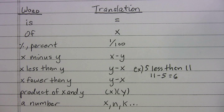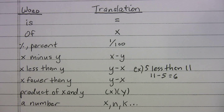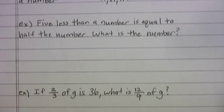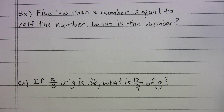Finally, these word problems will say 'a number' or something similar — that's just your variable. So anytime it says 'a number,' you can rewrite it as X, K, or whatever variable you're comfortable with. You can pause the video here if you want to write down this list. Now we're gonna go into problems and start practicing.